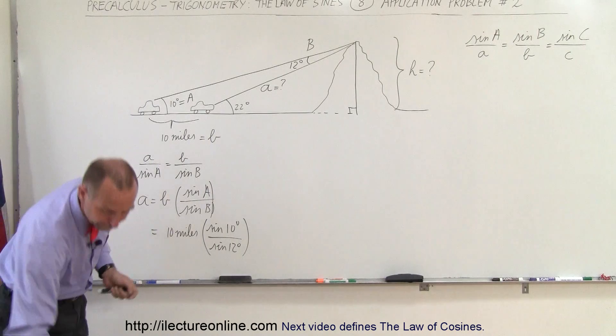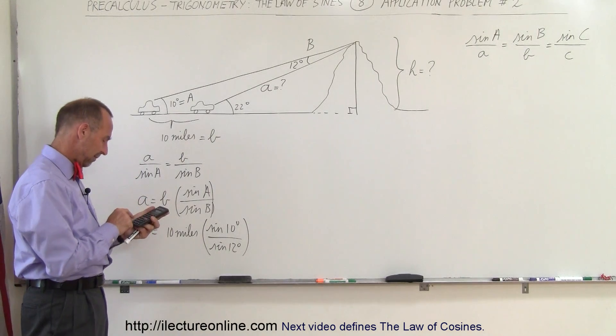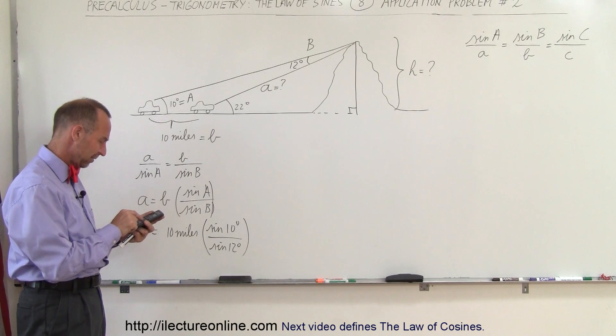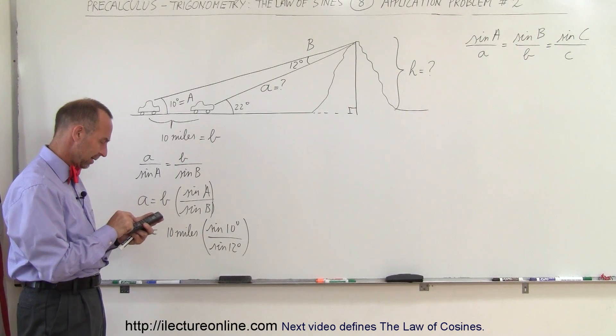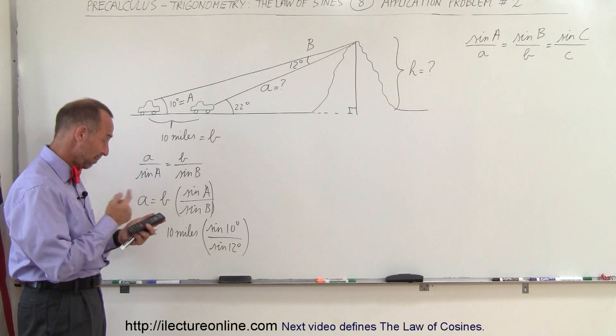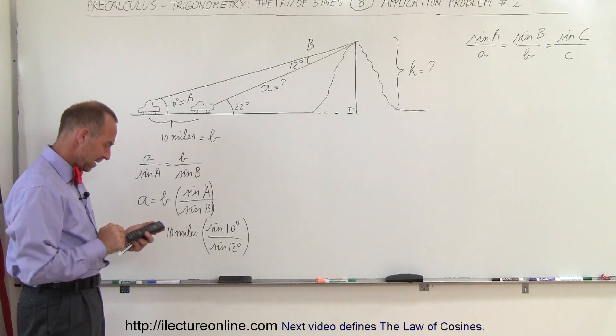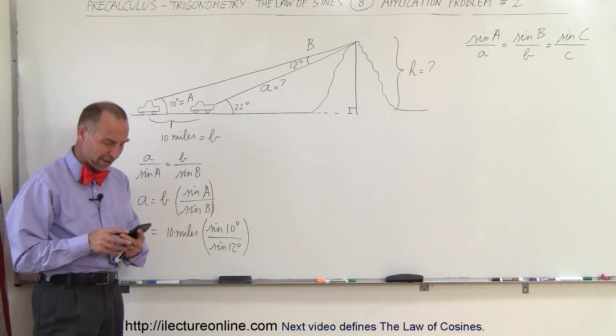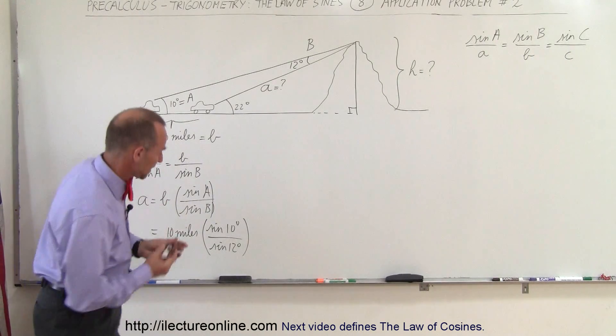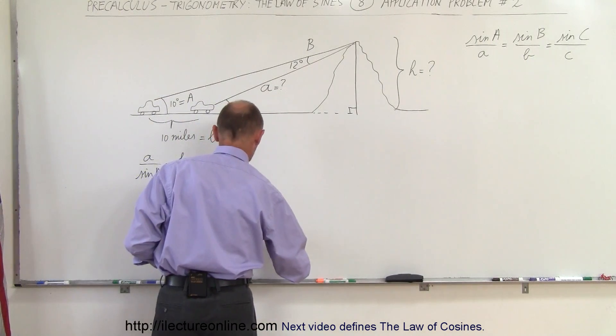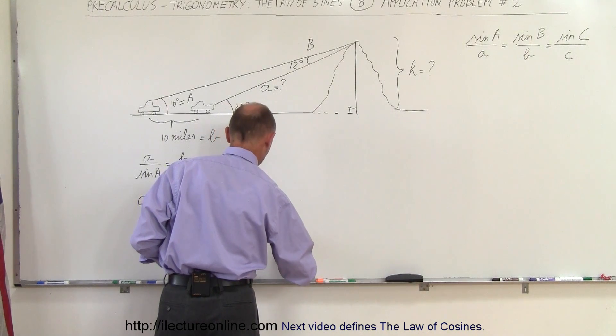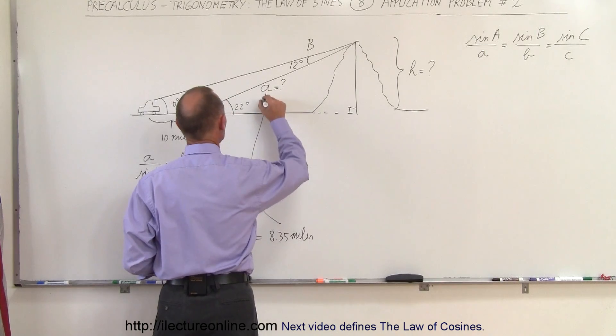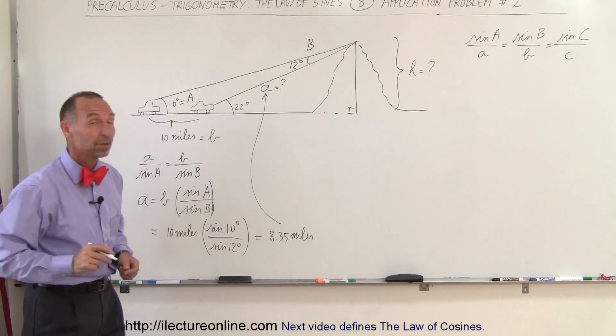Let's see what we get. We have 10, take the sine of that, divided by 12, take the sine of that, multiply times 10. That tells us that the mountain is 8.35 miles away. So at that point it's 8.35 miles, and that is side A.